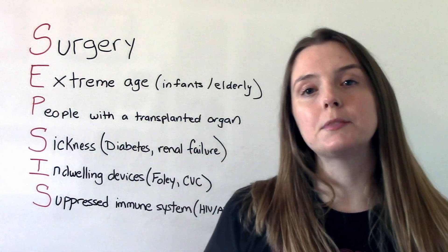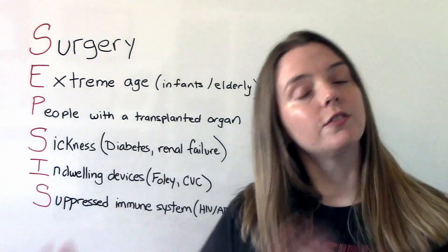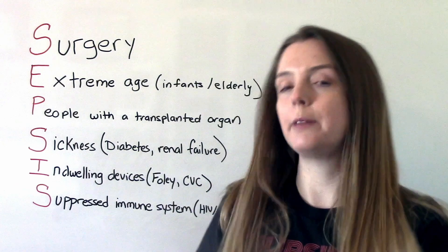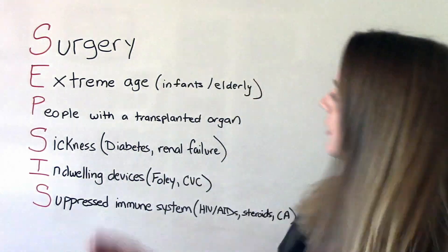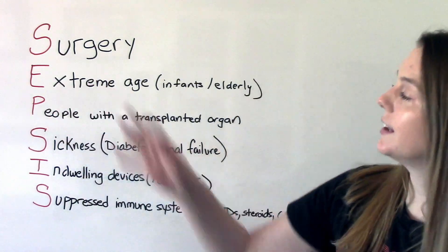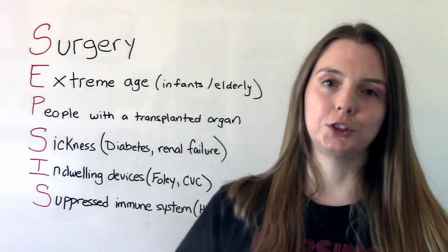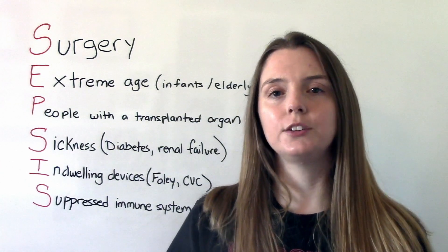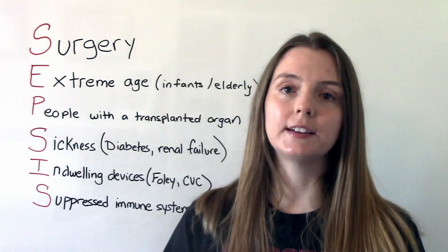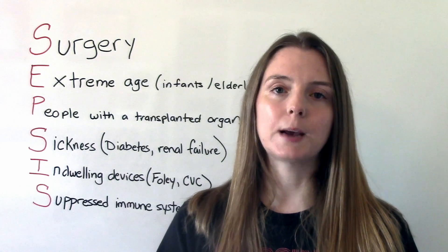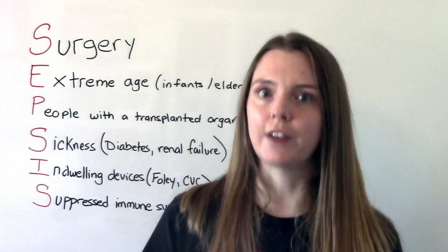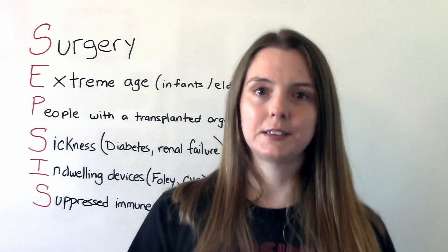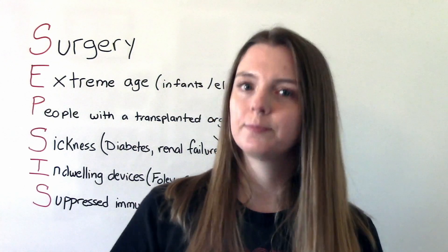E is for extremes in age — the very young and the very old, small babies and the elderly. P is for people who've just had an organ transplant. When you have an organ transplant, your immunity is suppressed, making you more susceptible to infection. And when you get an infection, that could turn into sepsis, which could turn into septic shock.